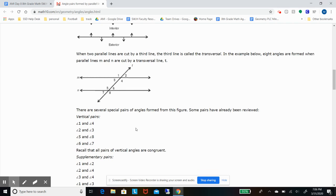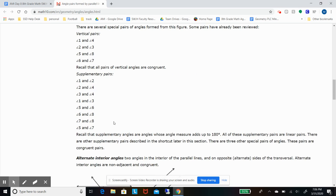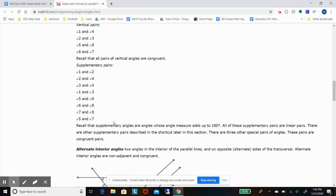And then we have this other case of vertical pairs. I like to tell students vertical pairs are two angles that sit across from each other in an X. They're formed by two intersecting lines.